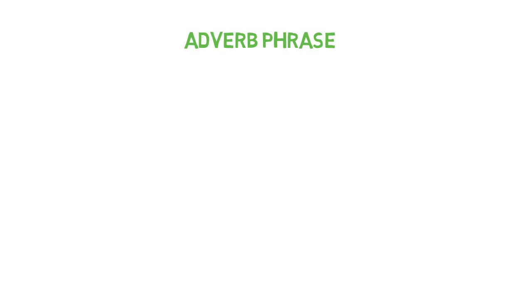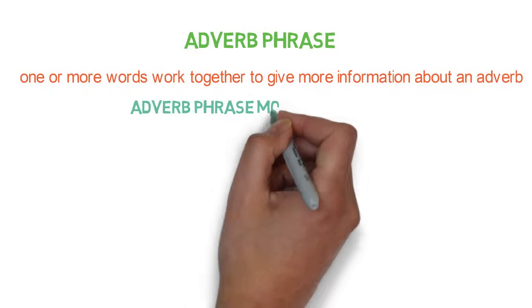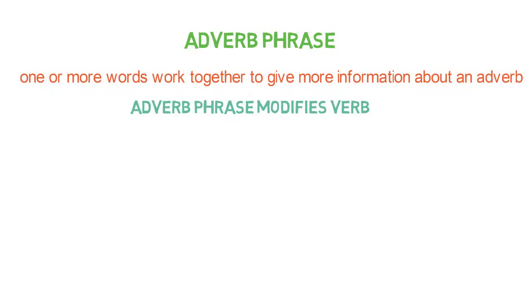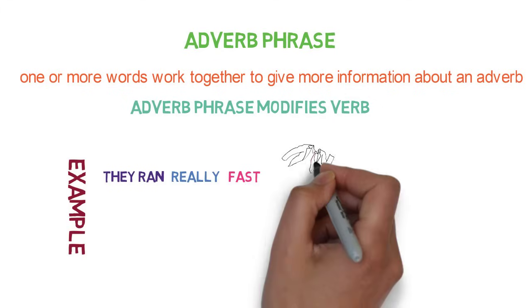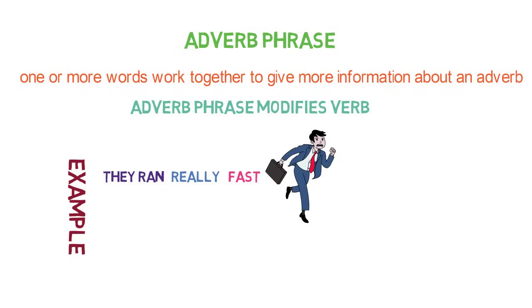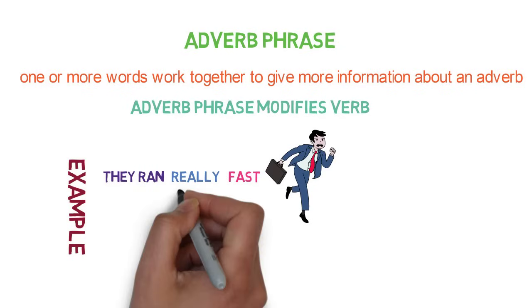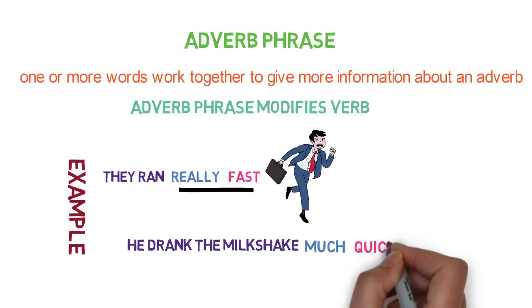Let's look into the next type of phrase: adverb phrase. In an adverb phrase, one or more words work together to give more information about an adverb. What does an adverb do? It modifies a verb — so does the adverb phrase. For example, 'they ran really fast' — here 'fast' is an adverb and 'really' is just providing more information about the adverb 'fast,' so 'really fast' is an adverb phrase.